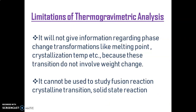The first limitation of Thermogravimetric Analysis is that it will not give information regarding phase change transformations like melting point and crystallization temperature, because these transitions do not involve any weight change. This technique is mainly used to study reactions that involve a weight change or mass change.